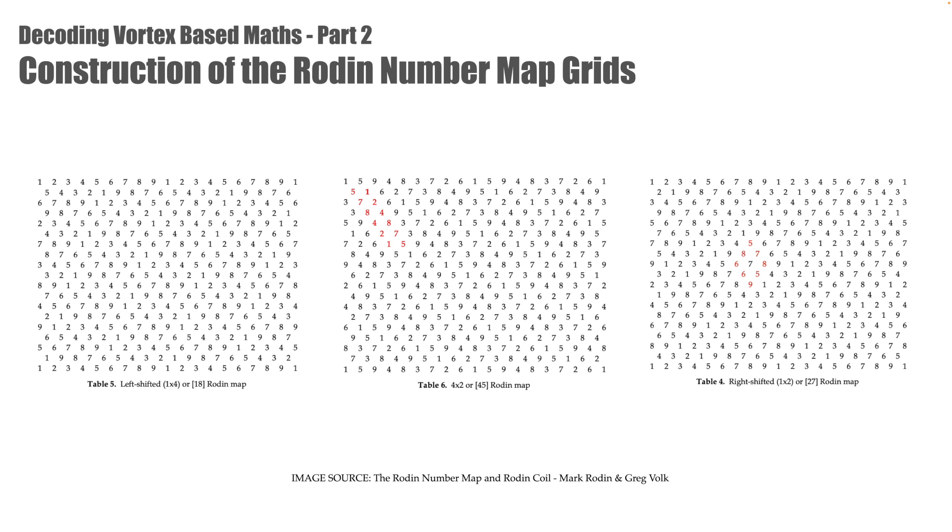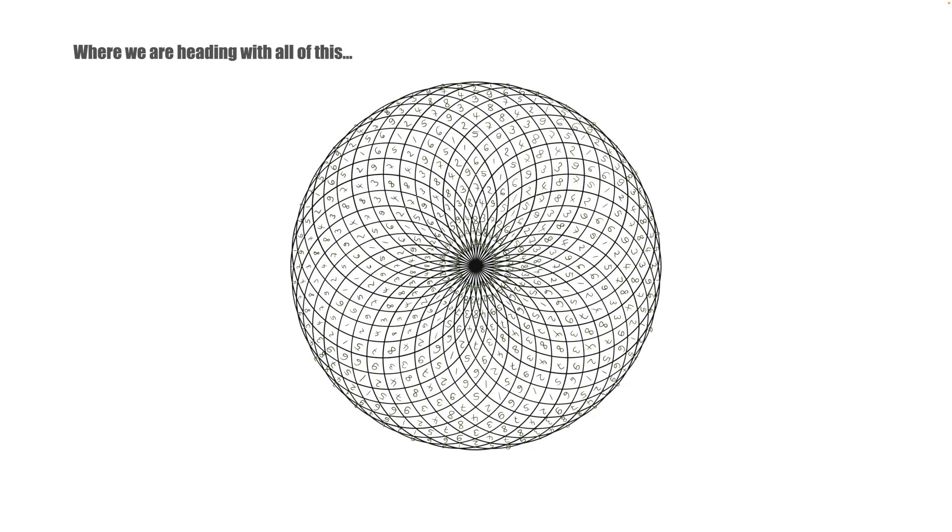In this part we'll construct the different possible Rodin number maps in their simplistic form, arranged as a 2D grid. This is just an intermediary step to applying the number map to the toroid. We could skip directly to applying the numbers to the toroidal number map, but understanding a few methods of applying the numbers in a simple grid before applying them to the toroid is helpful to get our heads around the complete process.